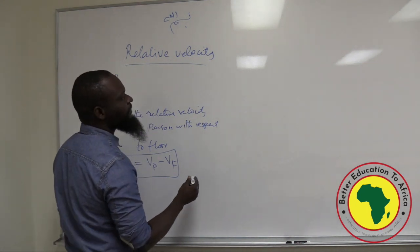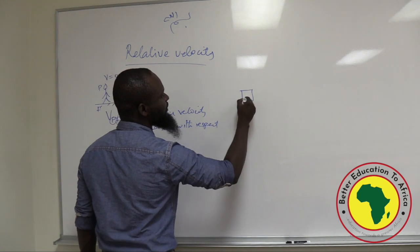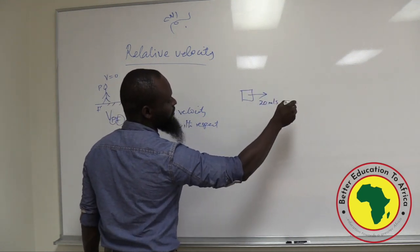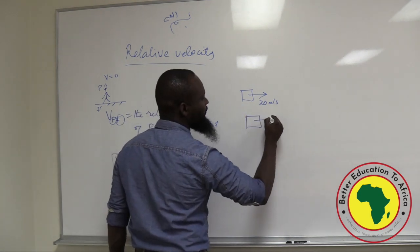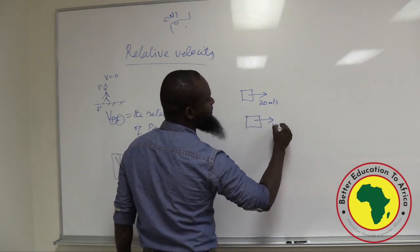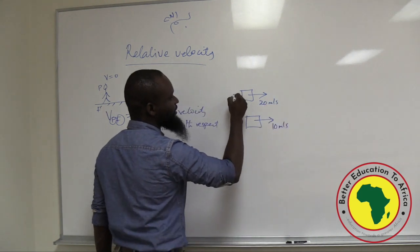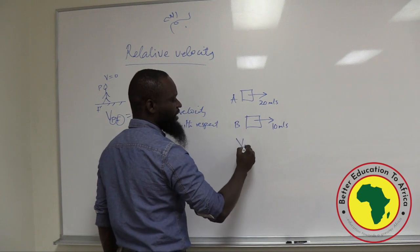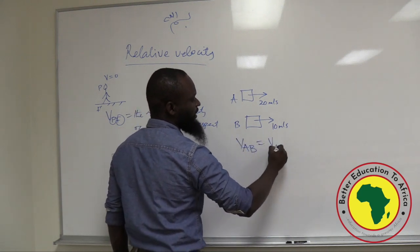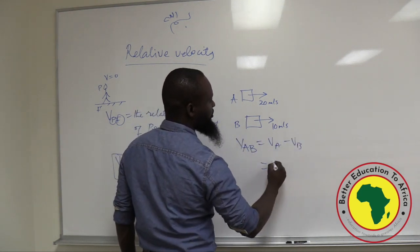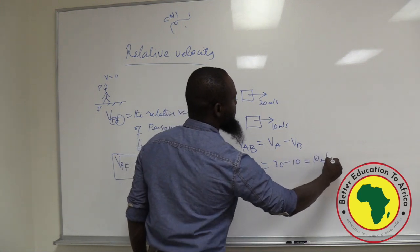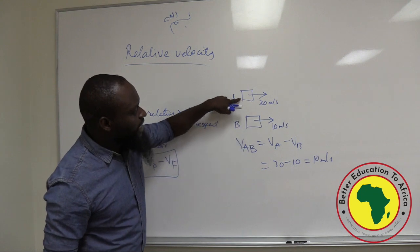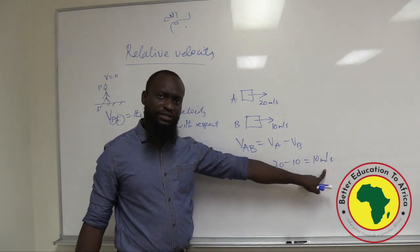If I have a particle moving with a velocity of 20 meters per second towards the right, and another particle moving with a velocity of 10 meters per second towards the same right — particle A and particle B — what is the velocity of A relative to B? V-AB equals V-A minus V-B, so it will be 20 minus 10, which is 10 meters per second. Relative to B, B will see A moving at 10 meters per second.